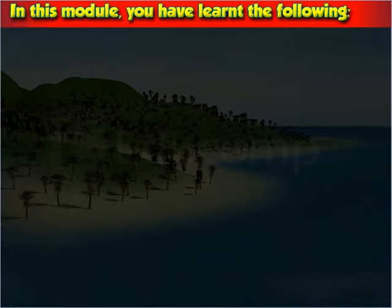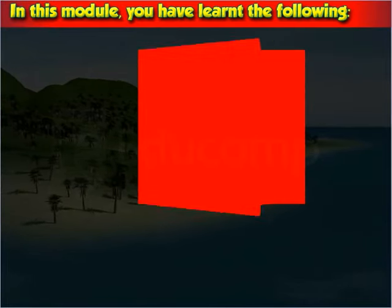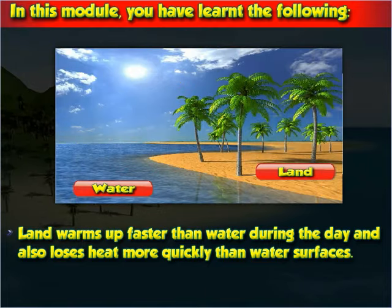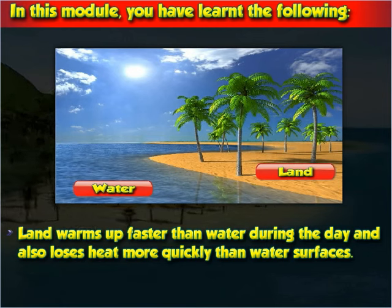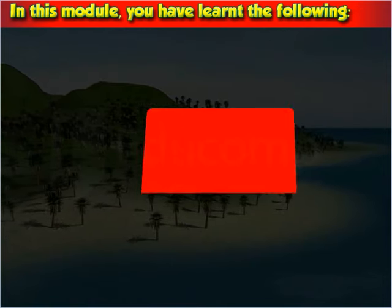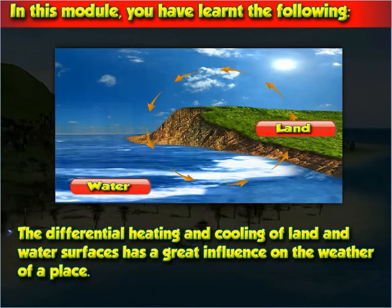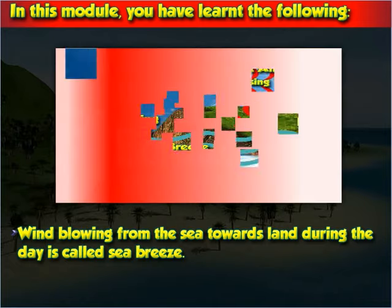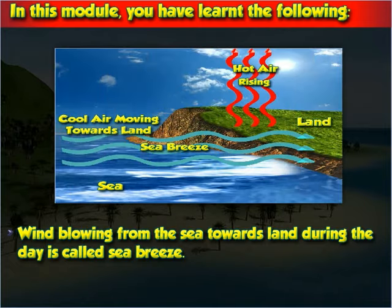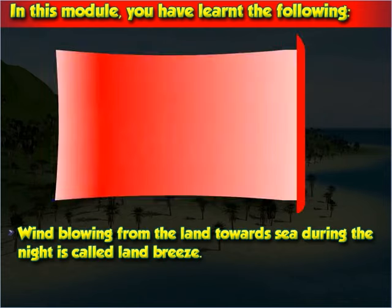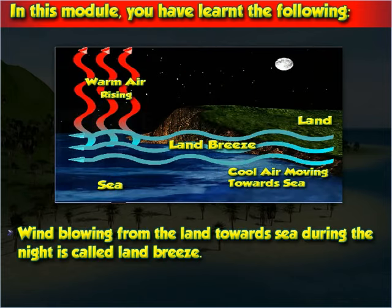In this module, you've learned the following. Land warms up faster than water during the day and also loses heat more quickly than water surfaces. The differential heating and cooling of land and water surfaces has a great influence on the weather of a place. Wind blowing from the sea towards land during the day is called sea breeze. Wind blowing from the land towards sea during the night is called land breeze.